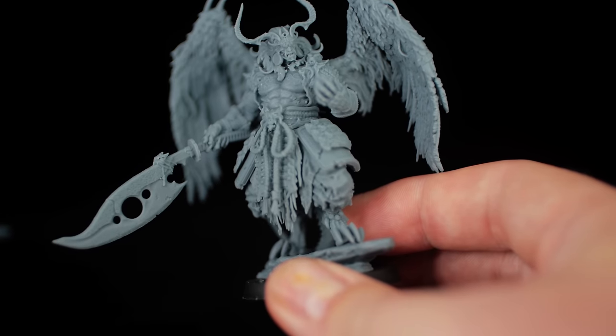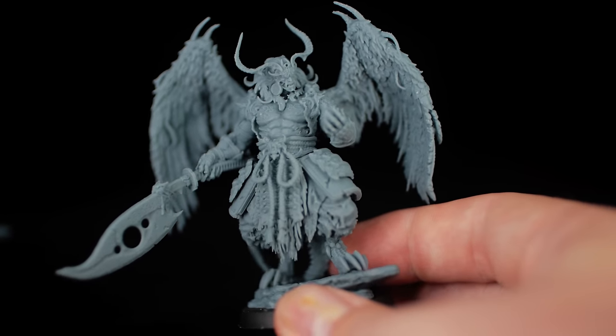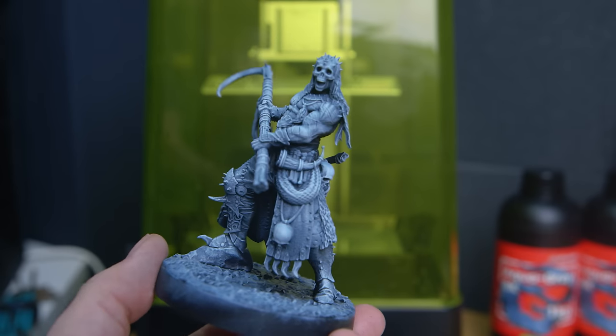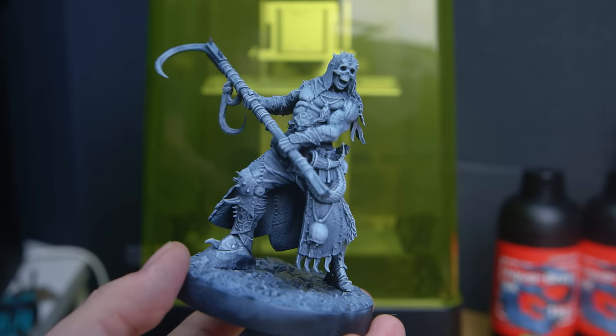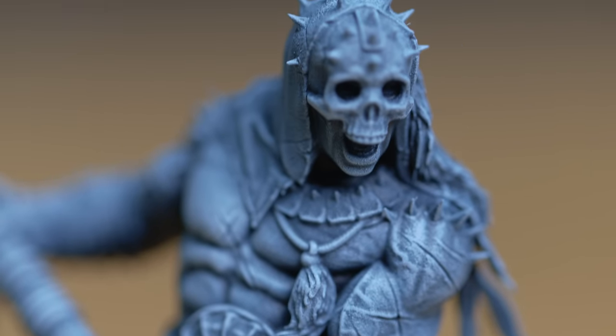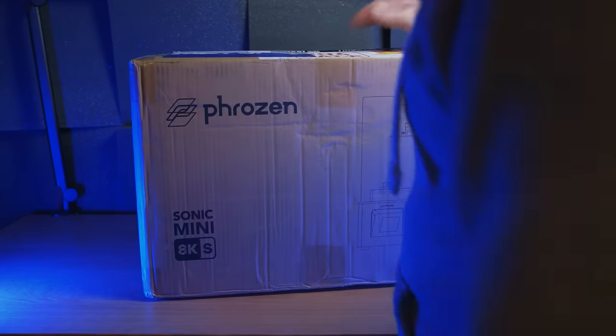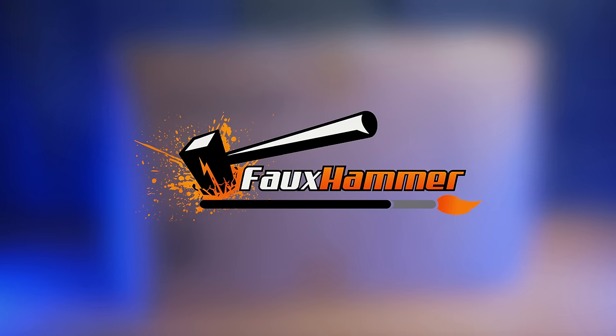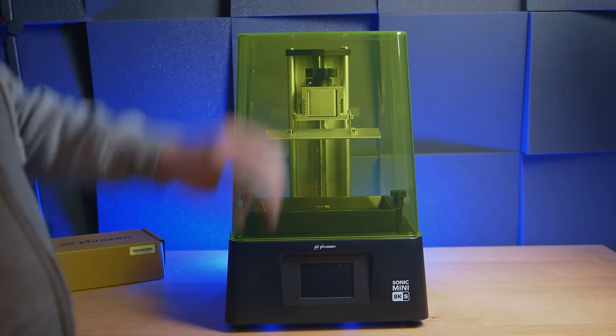So whilst Phrozen already had the best quality printer on the market in terms of pixel size, they've decided to one-up themselves by re-releasing that product again but now at entry-level prices. So how have they done that, what's the catch, and what's wrong with it? Well, that's what I'm here to tell you. Hi, I'm Ross, this is Warhammer Videos, and let's take a look at the Sonic Mini 8KS.